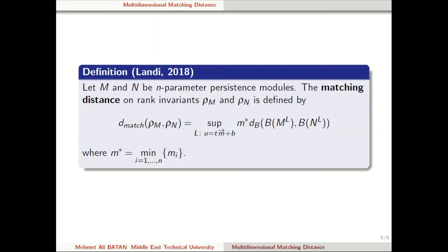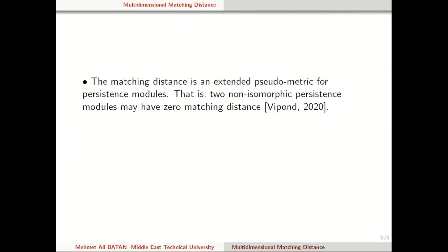What are the properties of this distance? First of all, this matching distance is extended — that is, it may take infinity as a value. It is also not a metric but a pseudo-metric for persistence modules, even for finitely presented persistence modules. It is a pseudo-metric and not a metric because we may have two non-isomorphic persistence modules such that their matching distance is zero. That is why it is a pseudo-metric.